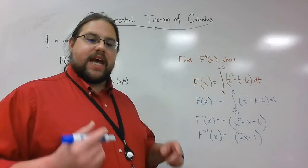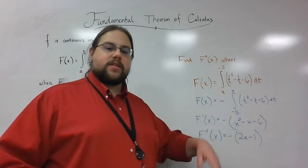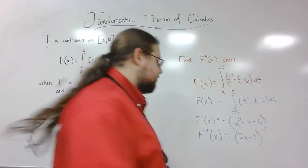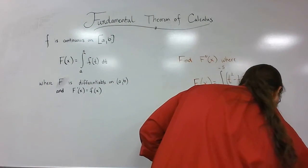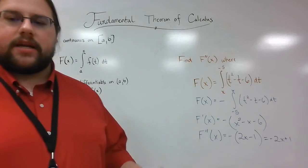The second derivative of big F of x is equal to negative of 2x minus 1. You could also write that as negative 2x plus 1. Just distribute the negative. Both of them are correct. There you go.